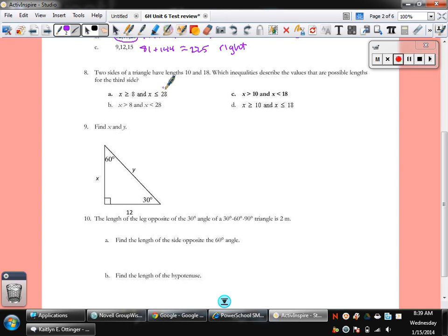Two sides of a triangle have lengths of 10 and 18. Which inequalities describe the values that are possible lengths for the third side? Plus them and minus them. So 8 and 28 are the numbers we're looking for. So I can immediately eliminate those. It can't be greater than or equal to. Remember, it's got to be just greater than. So the answer here is B.